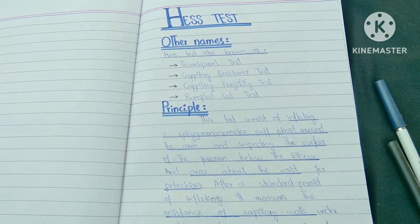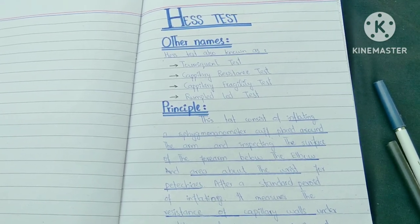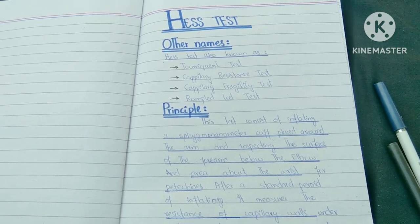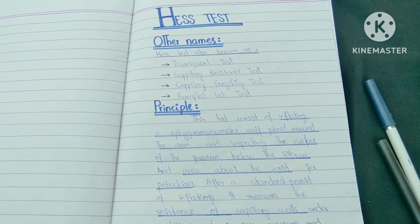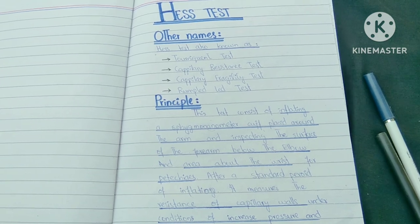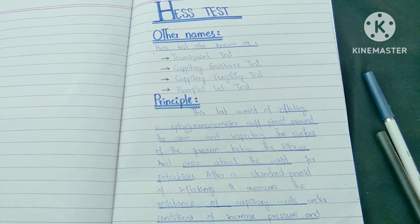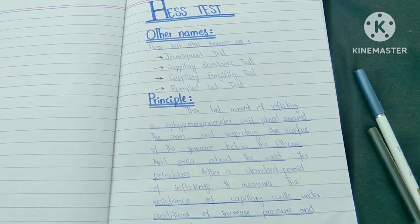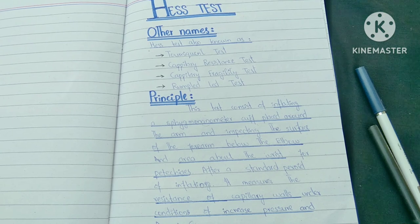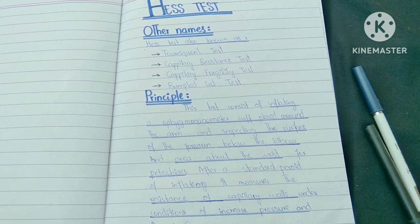We have to apply the BP cuff and then maintain a pressure for a standard period of 5 minutes. After this, we will examine the skin from elbow to wrist and the petechiae will show if the test is positive.